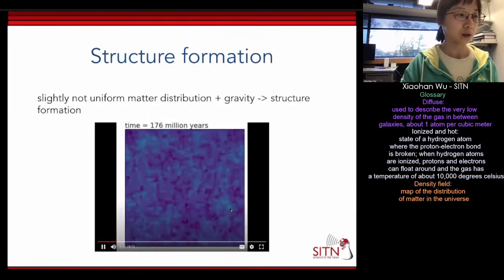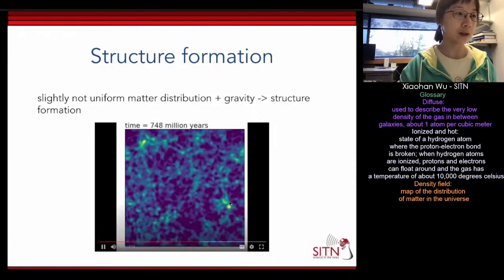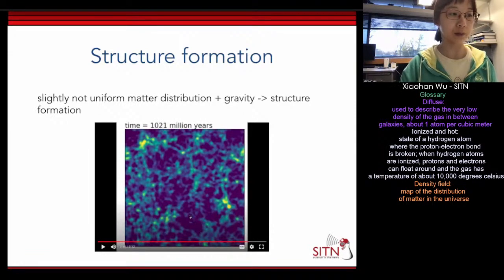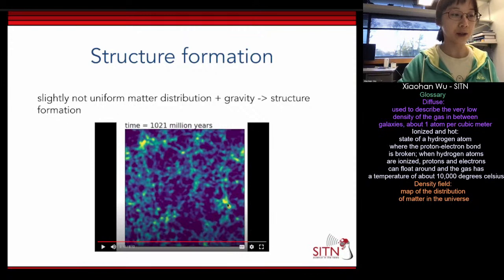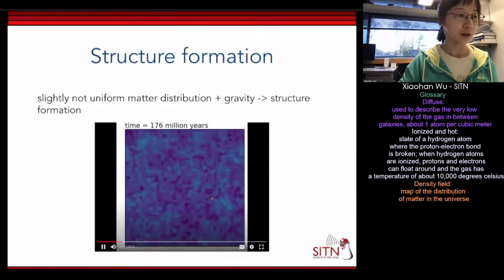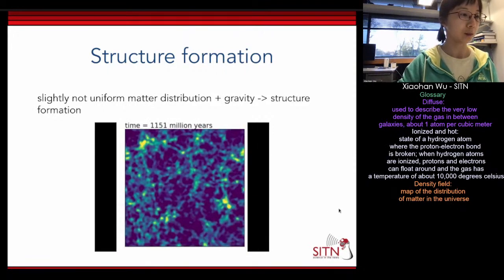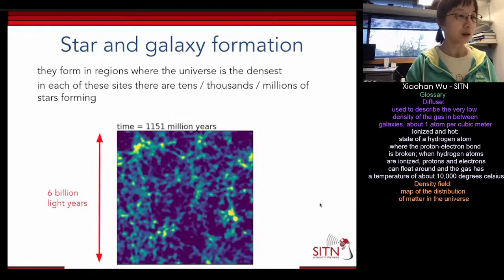Here's a movie illustrating how the initial tiny density fluctuations transition to the structures we see today. Initially there are tiny density fluctuations. Things with slightly higher density pull matter toward them, so the density around these structures grows higher and higher over time — the color becomes more yellow. Conversely, lower-density regions become bluer as matter is pulled away. Eventually, it's these higher-density regions that form the initial stars and galaxies.